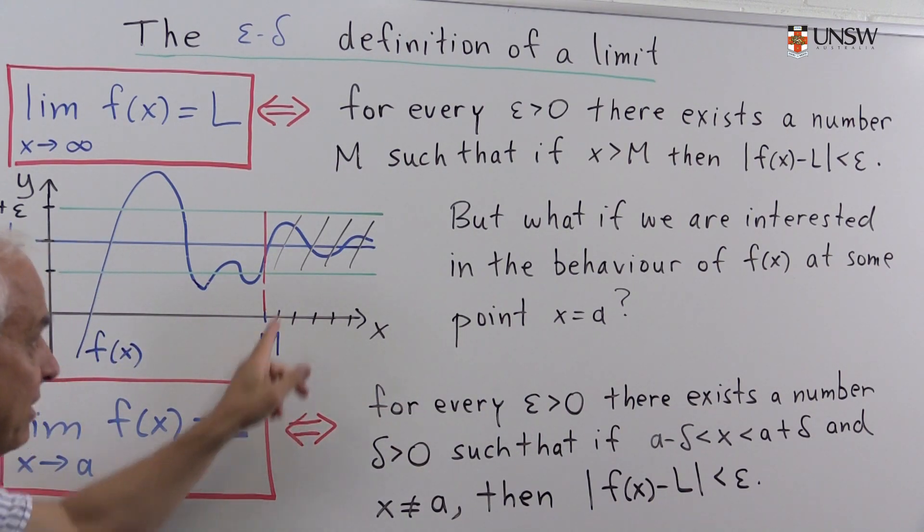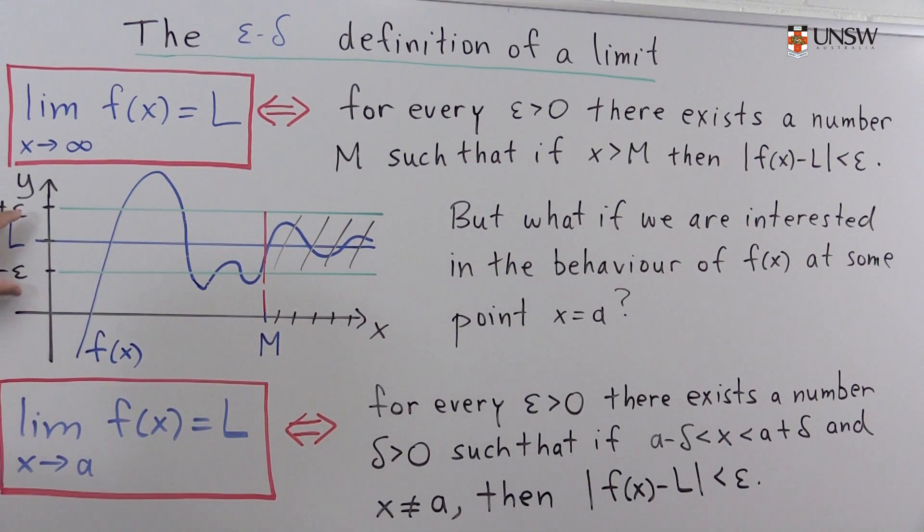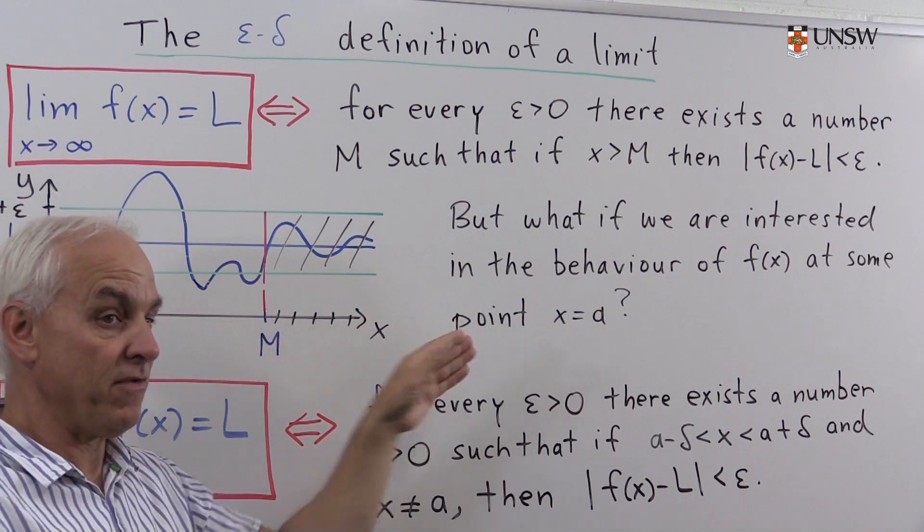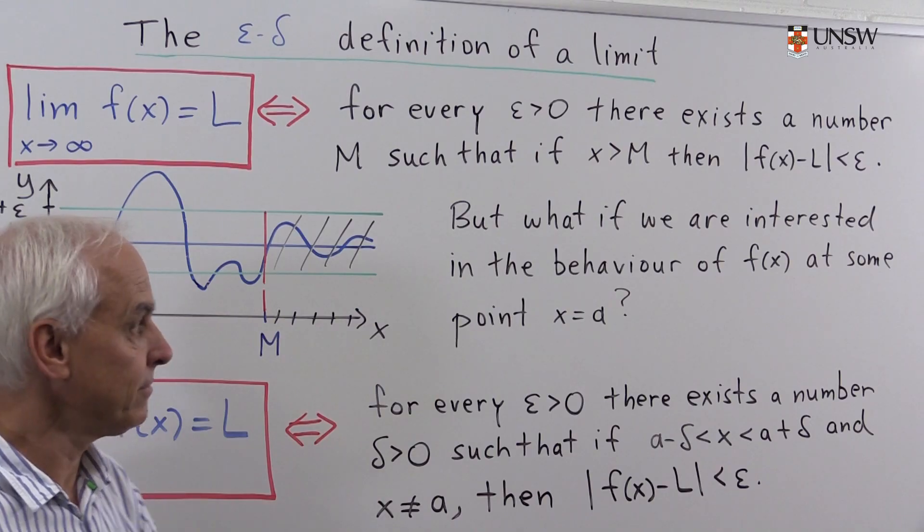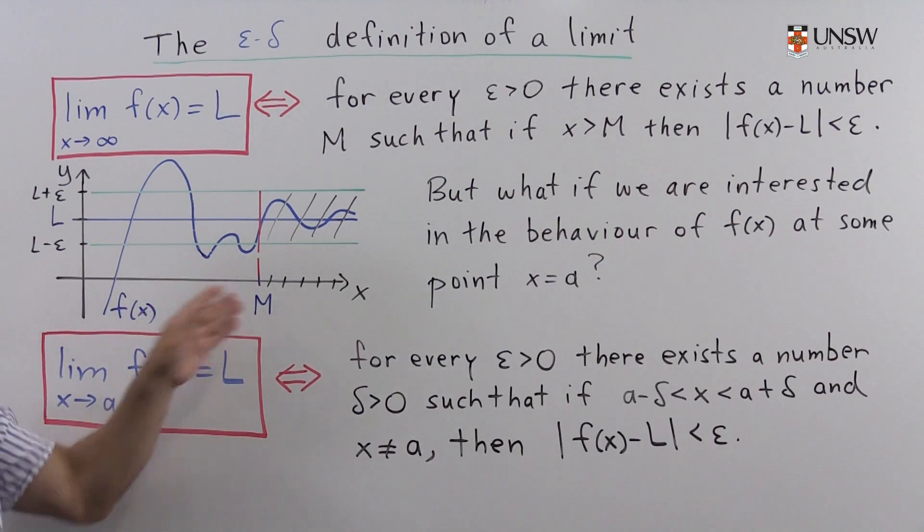Now, this M depends on the epsilon. So if we make a smaller epsilon, the band becomes narrower, and we typically have to go out further before we're assured that we're in that smaller band. All right, so that's well and good.